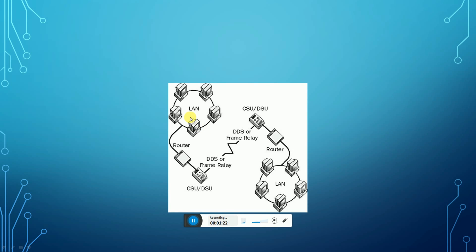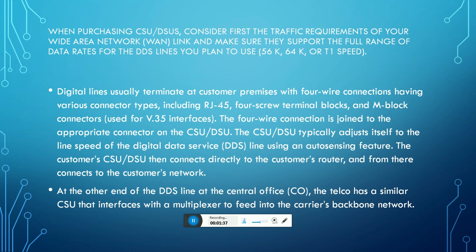This is a separate LAN, and this is another line at another place — the DSU Frame Relay connection. This is the CSU/DSU unit. When you purchase the CSU/DSU, consider first the traffic requirements of your wide area network WAN link, and make sure it supports the full range of data rates for DDS lines you plan to use: 56K, 64K, and T1 speeds.